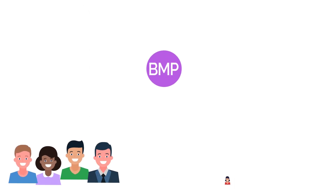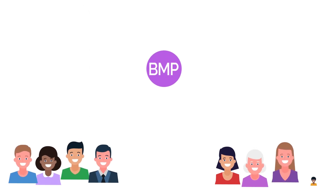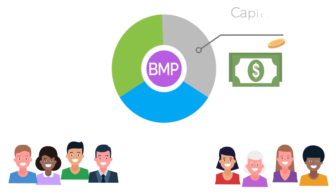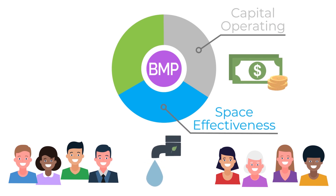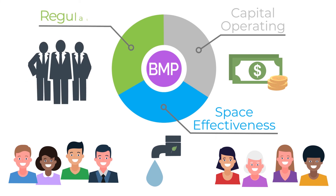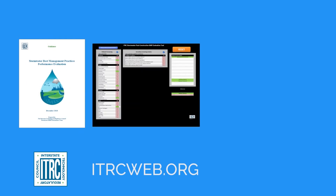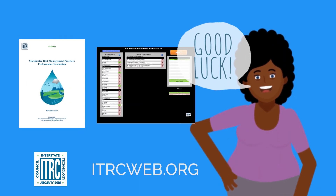With these suggestions in hand, you can return to your team. Together, you'll need to think about capital costs, operating costs, relative effectiveness, space requirements, and whether or not this BMP will be accepted by the regulators in your area. There might be other things you need to consider as well. Check out our guidance document and tool at the ITRC website. Good luck!